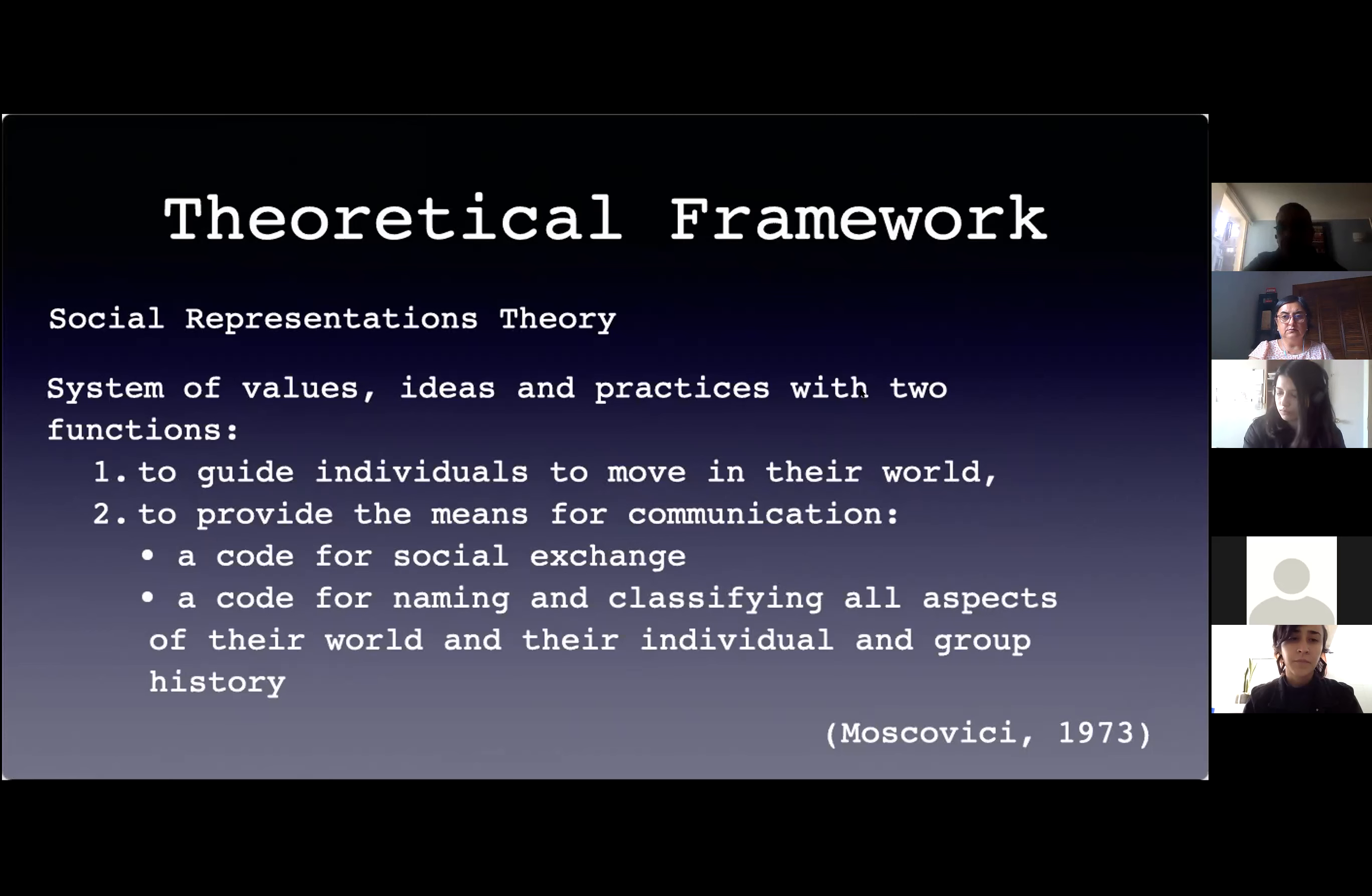In this sense, a social representation is understood as a system of values, ideas, and practices with two functions: to guide individuals to move in their world, and to provide the means for communication, a code for social exchange, and a code for naming and classifying all aspects of their world and their individual and group history. Social representations are created within society by the members of that society.